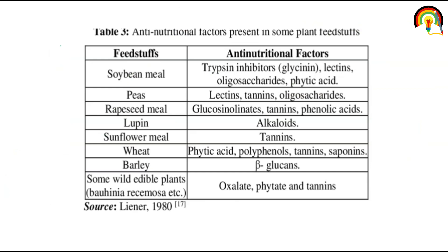This is an important table — questions have been asked from this portion about which anti-nutritional factor is found in which feed stuff. For example, soyabean contains trypsin inhibitor, lectin, oligosaccharides, and phytic acid. Peas contain lectin, tannin, and oligosaccharides. Rape seed meal contains glucosinolates, tannin, and phenolic acids.